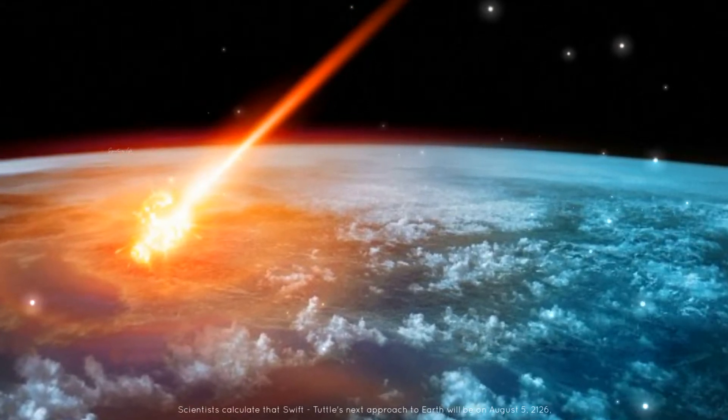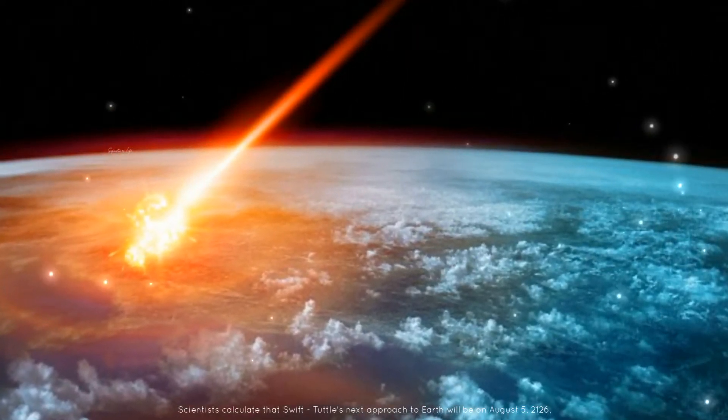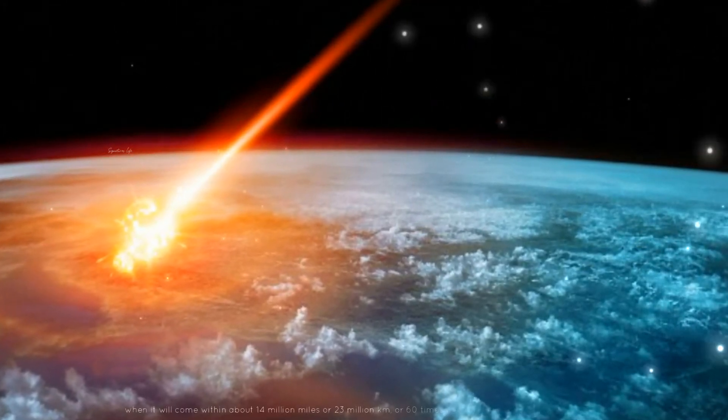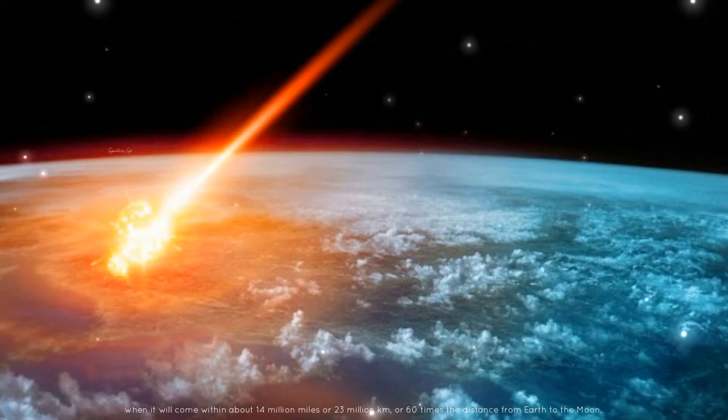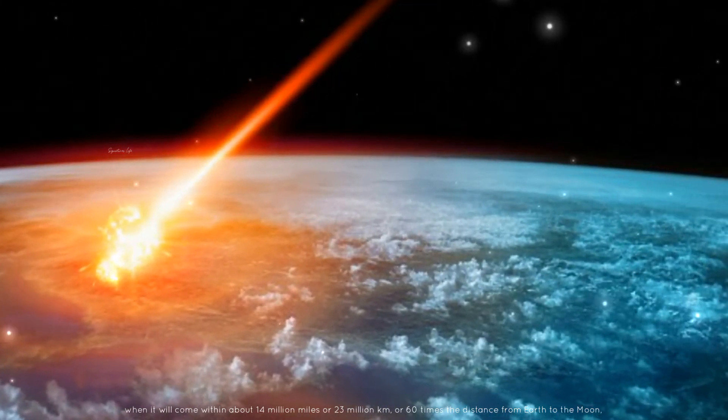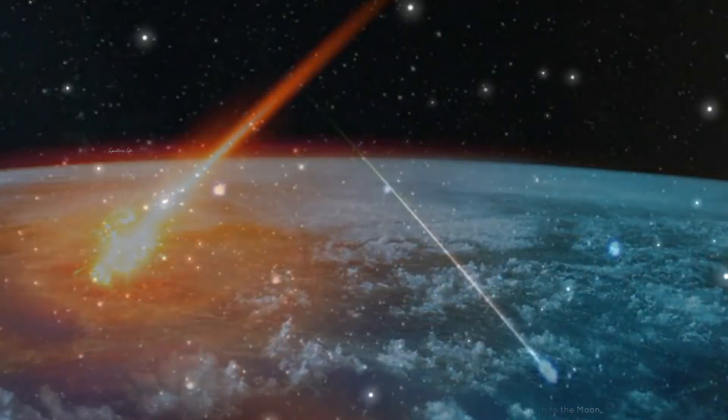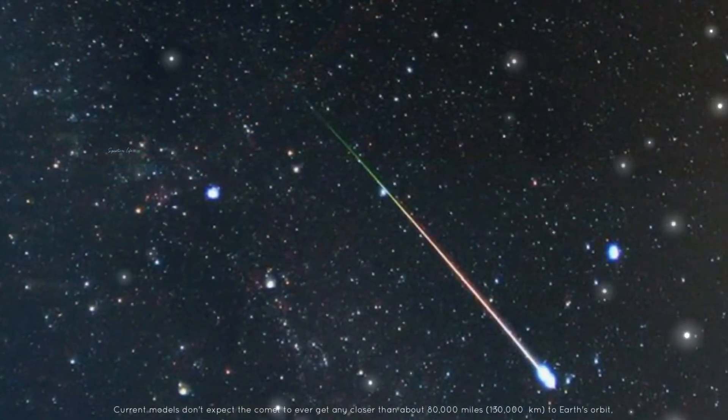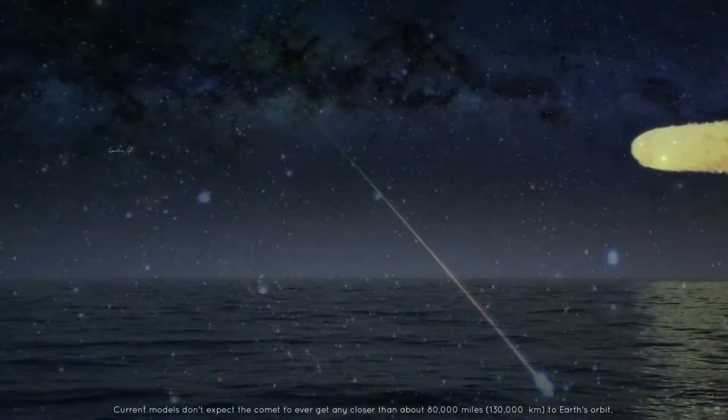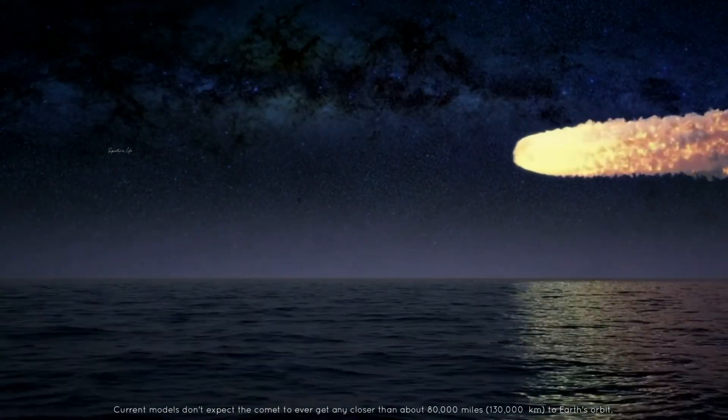Scientists calculate that Swift-Tuttle's next approach to Earth will be on August 5, 2126, when it will come within about 14 million miles, or 23 million kilometers, or about 60 times the distance from Earth to the Moon. Current models don't expect the comet to ever get any closer than about 80,000 miles, or 30,000 kilometers to Earth's orbit.